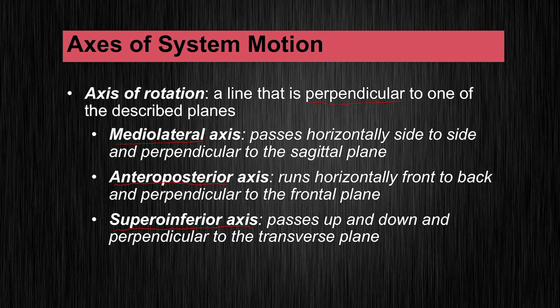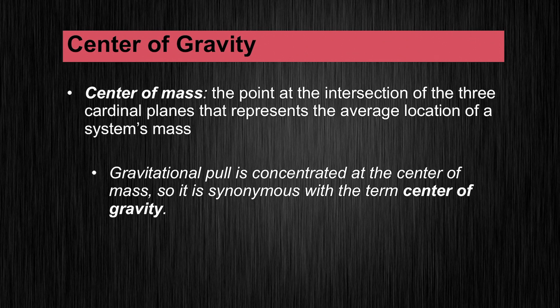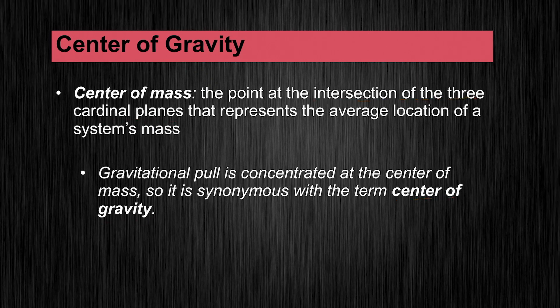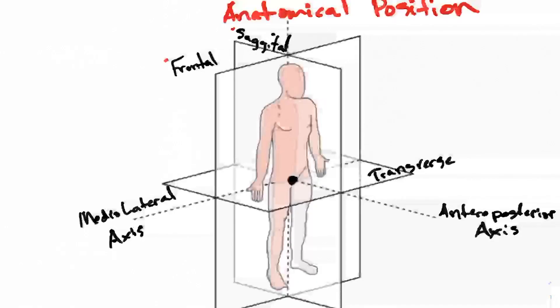Now we have to talk about the center of mass or the center of gravity — these are two different things. The center of mass is the point at the intersection of the three cardinal planes, and it represents the average location of a system's mass. If you could somehow balance somebody right at its center of mass, it would be perfectly balanced. Gravitational pull is concentrated at the center of mass, so it is synonymous with the term center of gravity, though it's important to remember that mass and weight are two different things. Let's draw the center of mass on our figure — it's at that intersection of all three planes, abbreviated as COM.